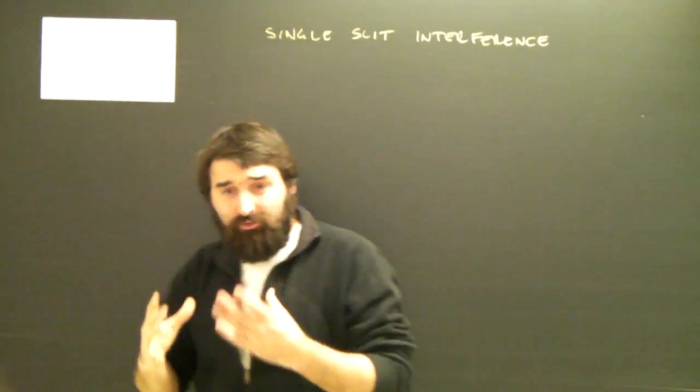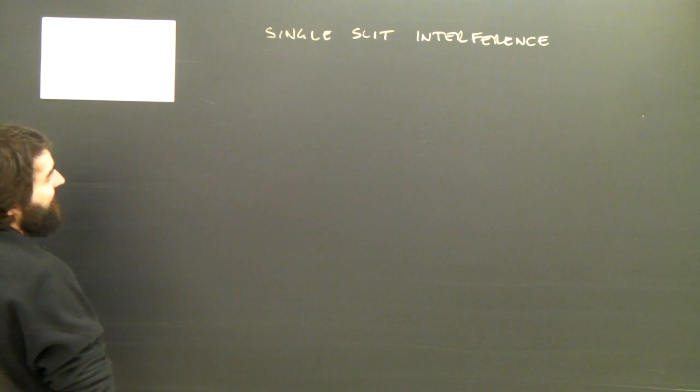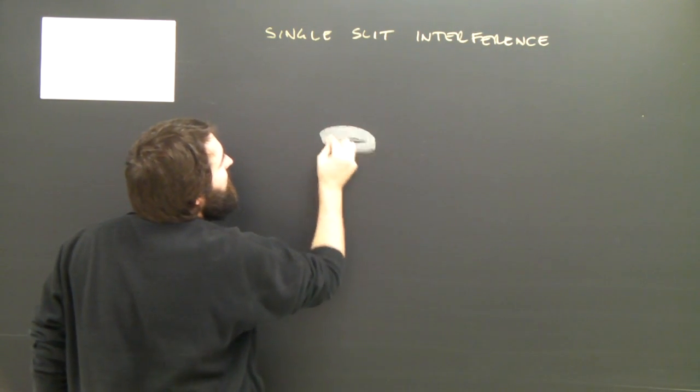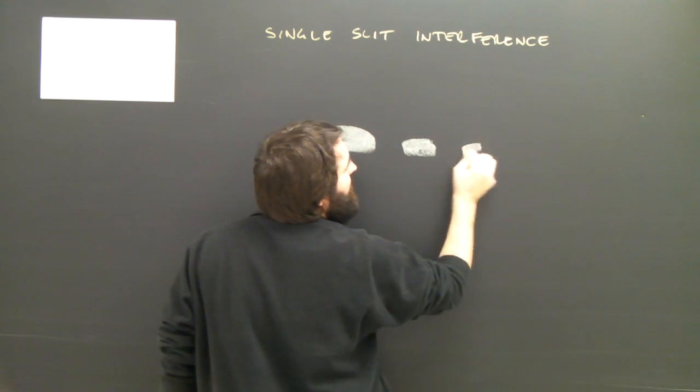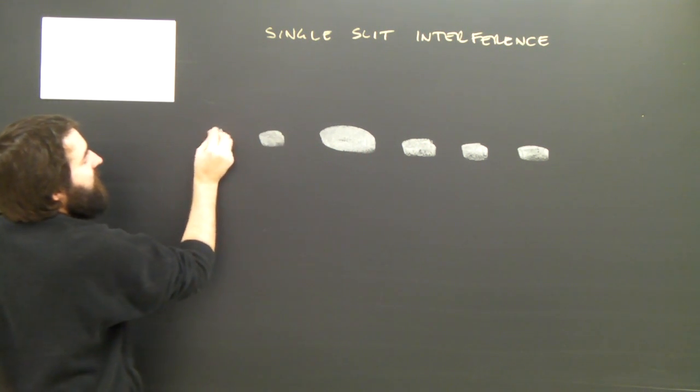So hopefully what you can see there was that the central maximum, the central spot, was twice as wide as it was before. This was the central maximum. The next one was about like that, like this, like this, like this. And there was some other little sort of jump happening around the sides.